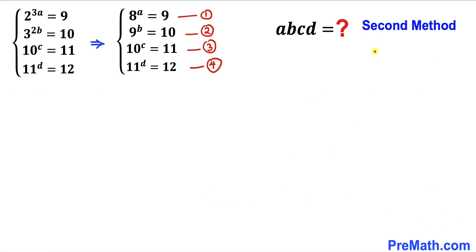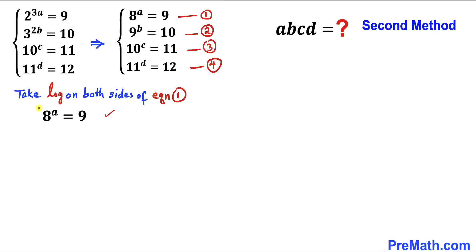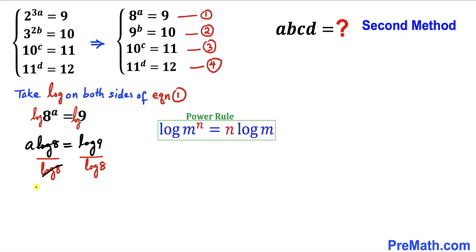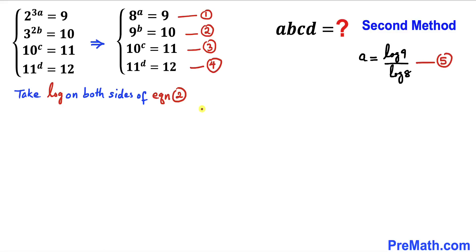Now let's look at Method 2. For equation 1 (8^a = 9), take the log of both sides: log(8^a) = log(9). Applying the power rule, this becomes a · log(8) = log(9). Dividing both sides by log(8), we get a = log(9) / log(8). Let's call this equation 5.